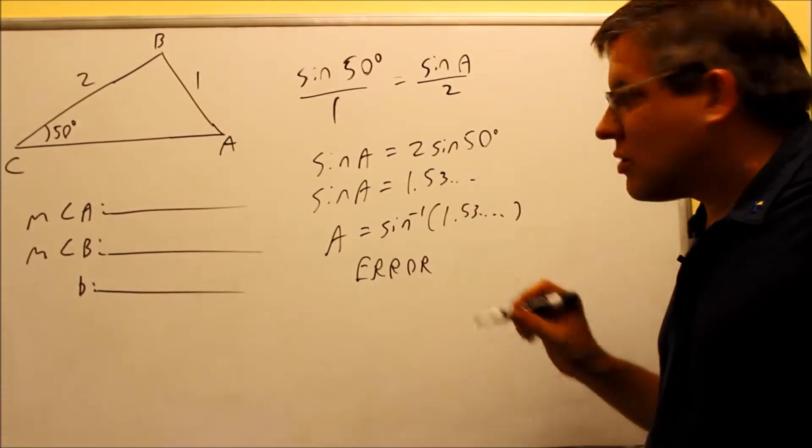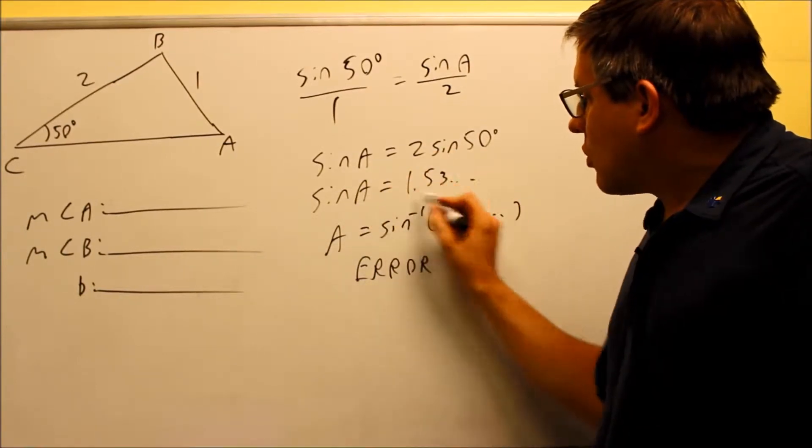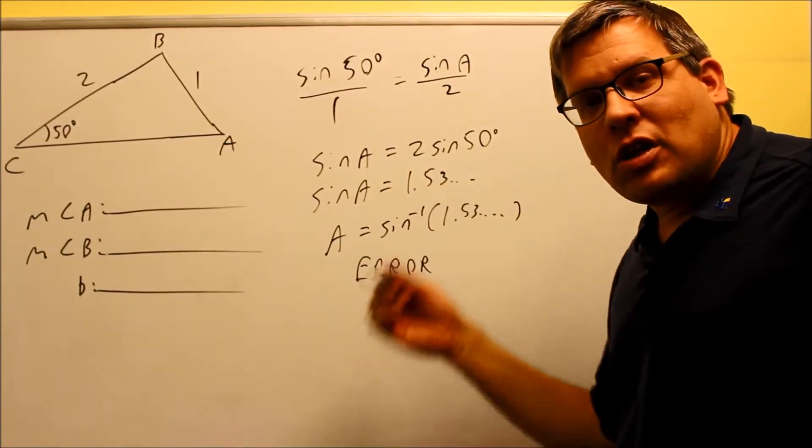Now, the reason why that is, is we can see actually right here. We have sine is equal to a number that's not between negative 1 and 1.